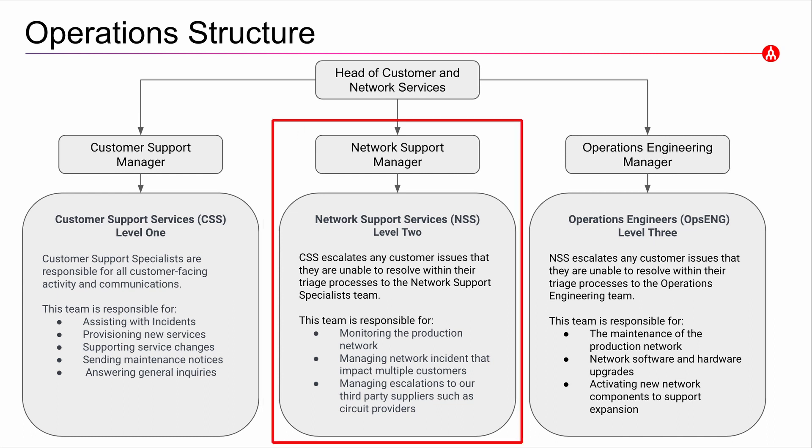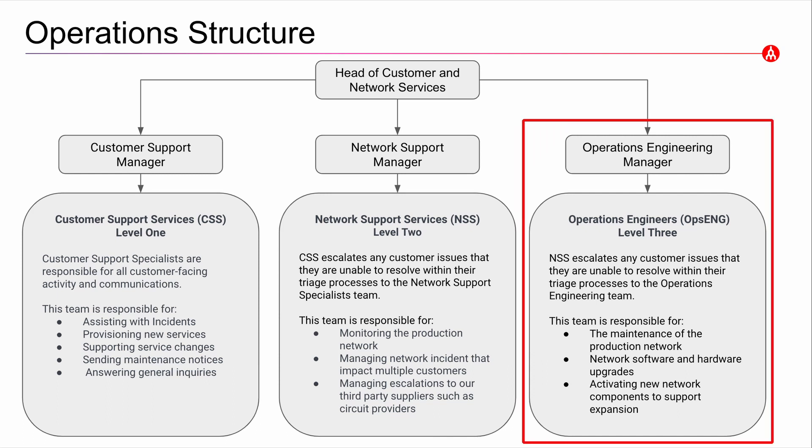The network support team is responsible for issues escalated to them by the customer support team. They also monitor the network for stability and redundancy. Finally, we have the operations engineering team. Traditionally level three, they're responsible for the maintenance of the production network, and they work on maintaining, expanding, and hardening the Megaport network. They are also part of the escalation process.